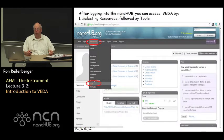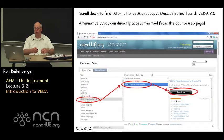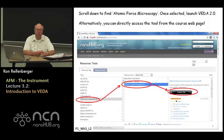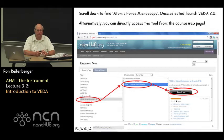Once you log in to Nanohub you can click on the Resources tab, and under the Resources tab click on Tools — a new window will open up. This new window will allow you to view the variety of tools available at Nanohub, and you can scroll down, pick out VEDA, and launch it from this format. Alternatively, if you go to the course web page there's a direct link to VEDA and just by clicking on that link you should immediately land on the VEDA web page.